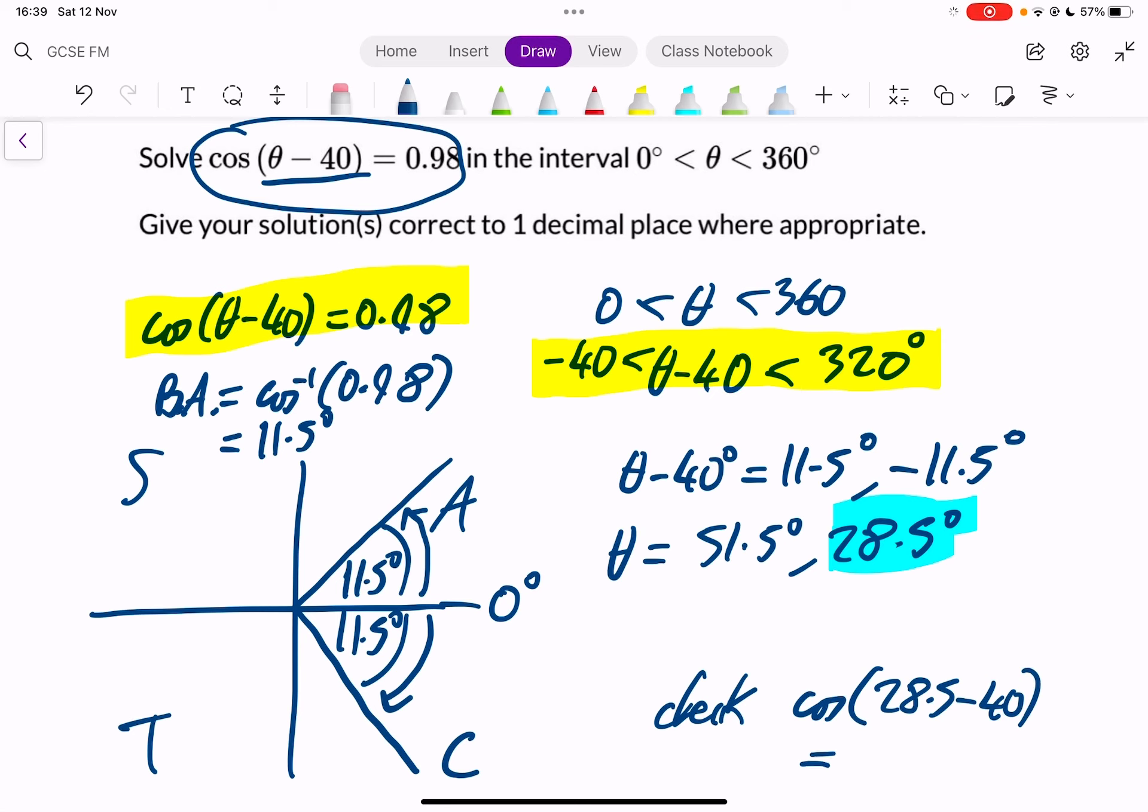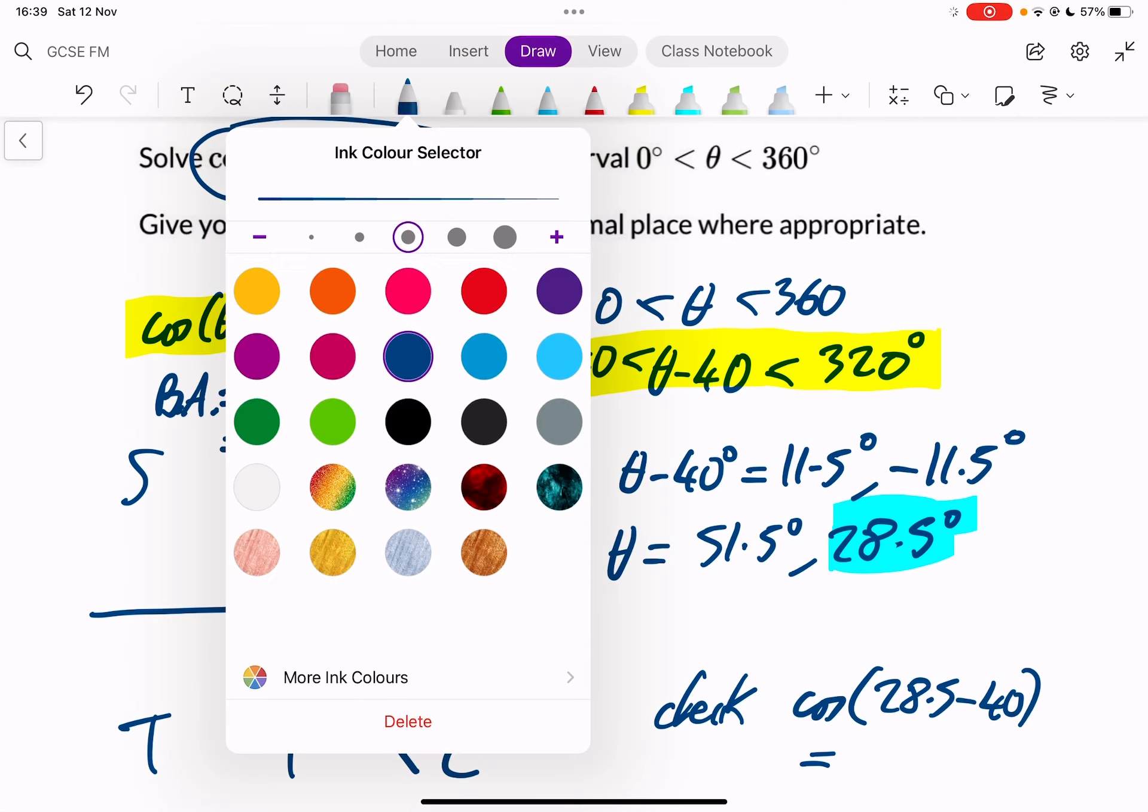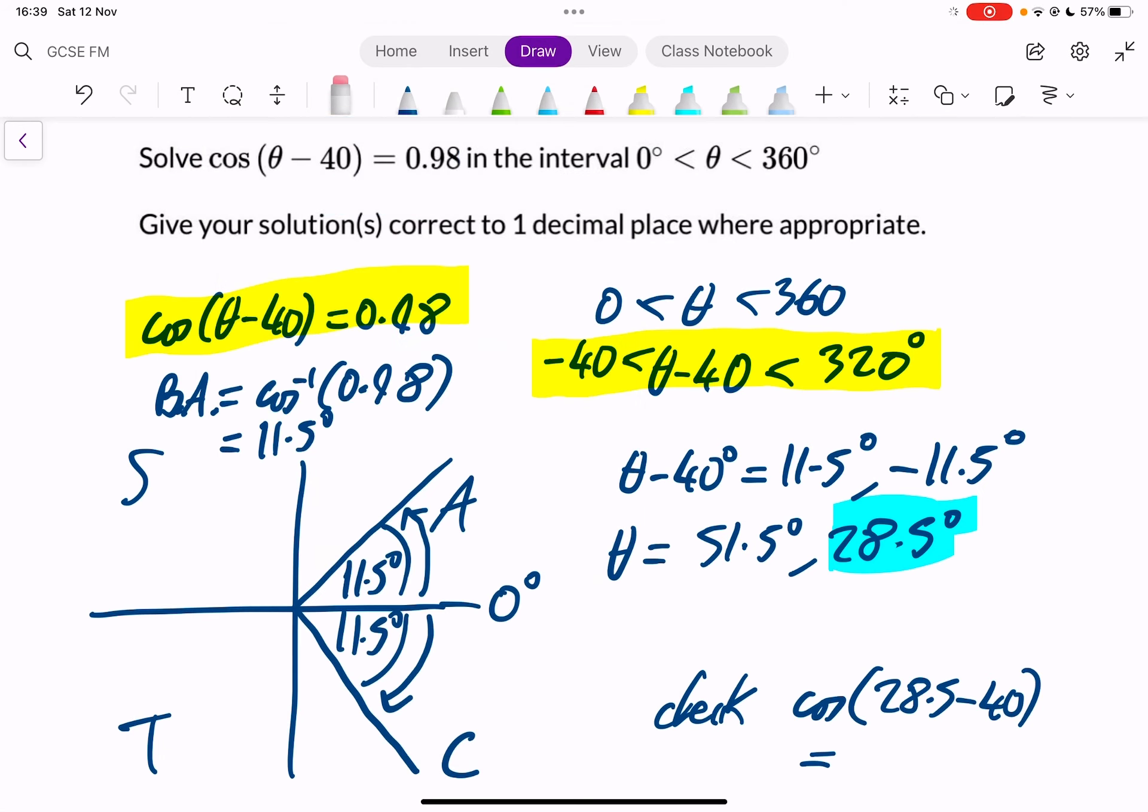And press equals. I'm going to do that in my calculator, cos, 28.5 minus 40, close my bracket, press equals. And it gives me 0.97992. So to two decimal places, it would be 0.98 as required. So you can see that check works. So I'm happy with those two answers, 51.5 and 28.5, and they're both to one decimal place.